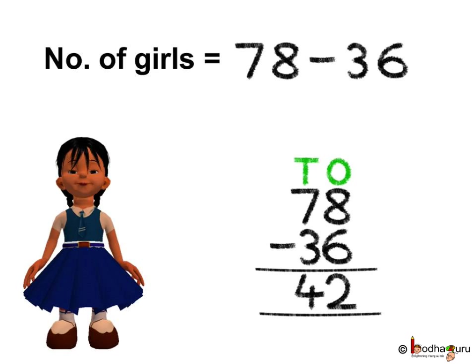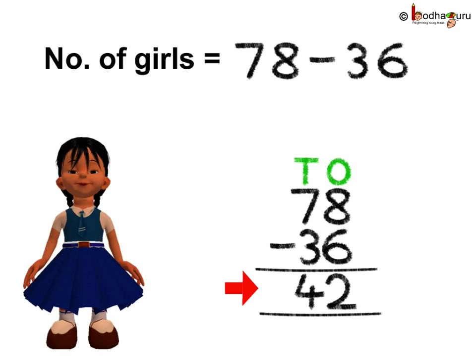So the total number of students is 78. Let us subtract: 78 minus 36. Starting from the ones position, 8 minus 6 is equal to 2. Coming to the tens position, 7 minus 3 is equal to 4. So the answer is 42. Thus there are 42 girls in the class.